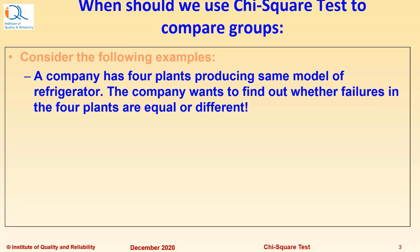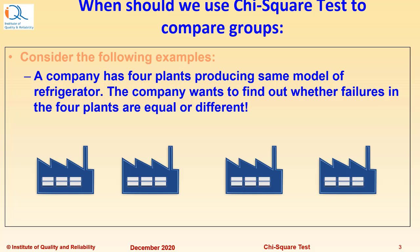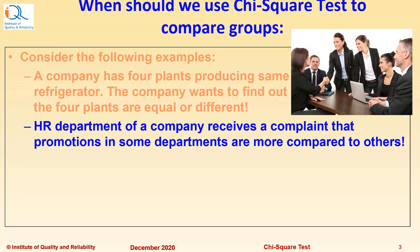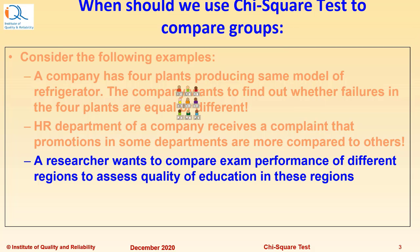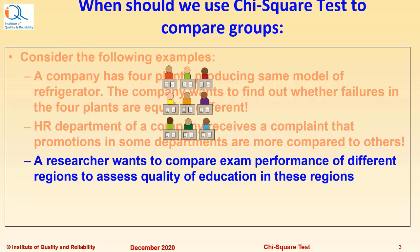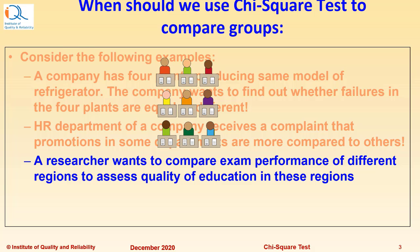Consider the following examples. A company has 4 plants producing same model of refrigerator. The company wants to find out whether failures in the 4 plants are equal or different. HR department of a company receives a complaint that promotions in some departments are more compared to others and they would like to investigate whether this is likely to be there or not. A researcher wants to compare exam performance of different regions to assess quality of education in these different regions.